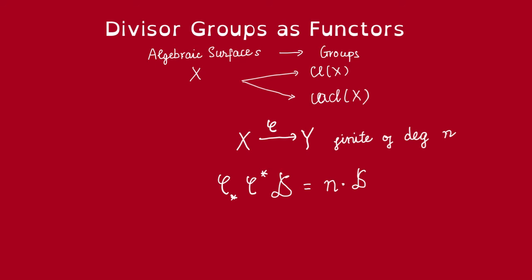Finally, observe the following relationship between the push-forward and the pullback. If the map φ is finite of degree n, then the push-forward of the pullback of any Cartier divisor is just going to be n times that divisor.